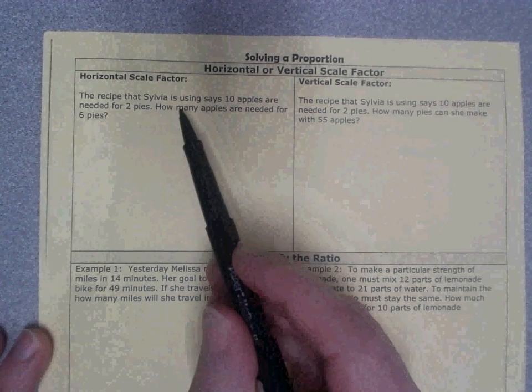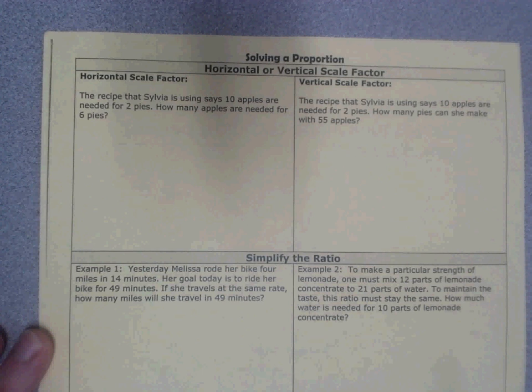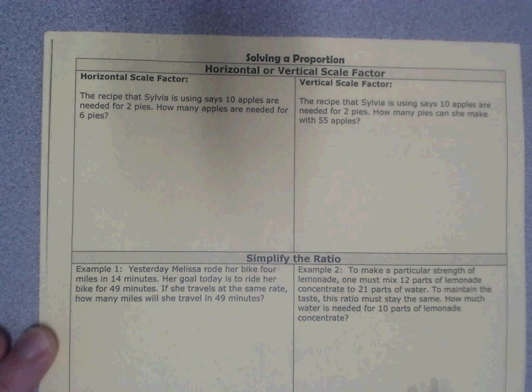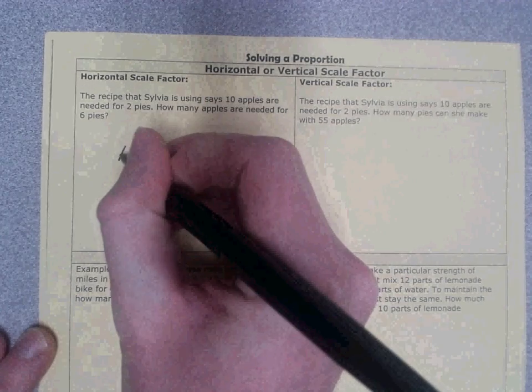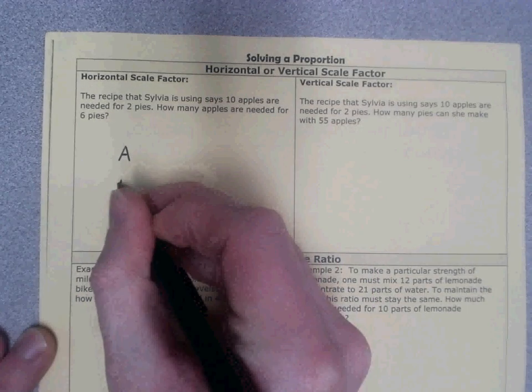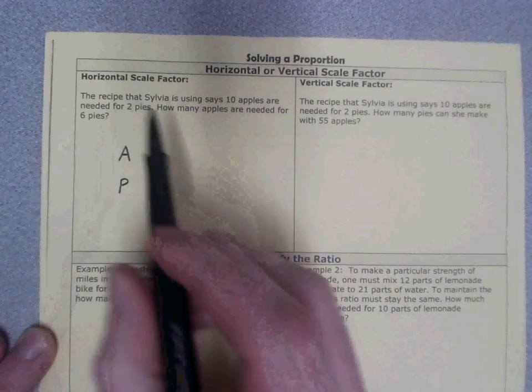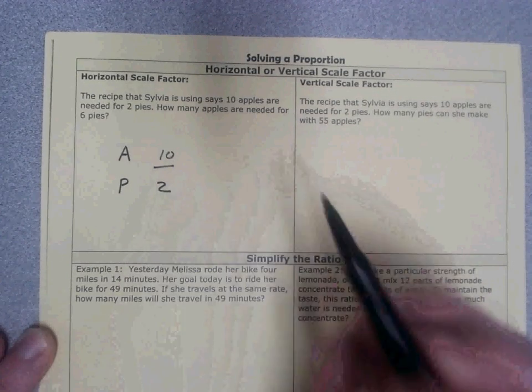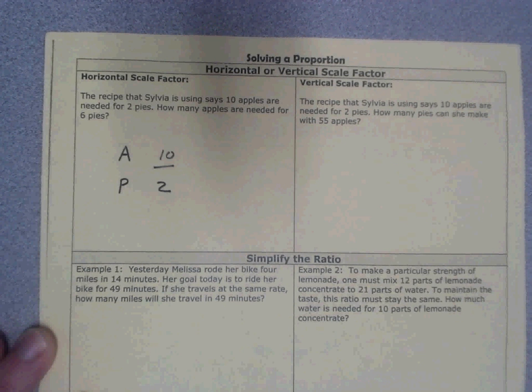The recipe that Sylvia is using says ten apples are needed for two pies. How many apples are needed for six pies? So we're going to start by putting our labels. I know I have apples and I have pies. It tells me that ten apples are needed for two pies. So I know I have ten apples for two pies. That's going to be the first ratio in my proportion.